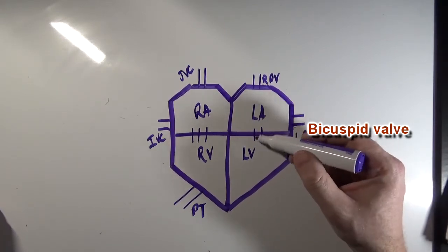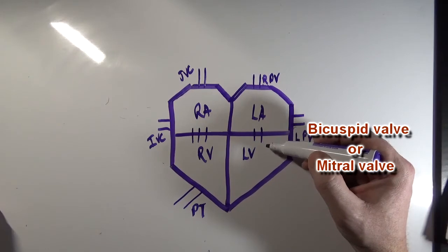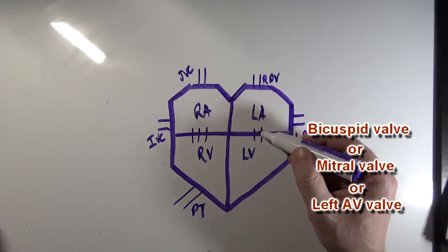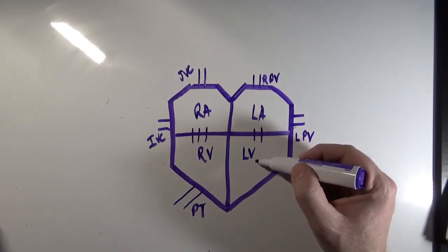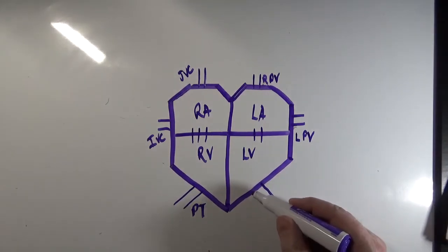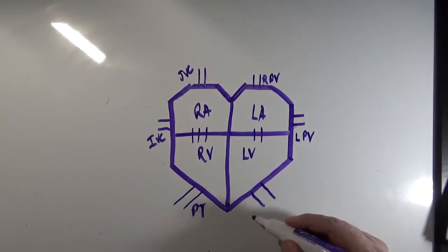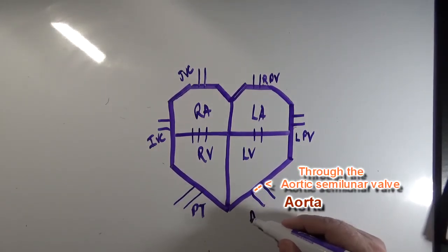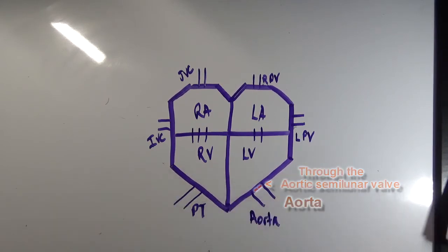The oxygenated blood passes through the bicuspid valve — represented with two lines for the two cusps. This bicuspid valve is also known as the mitral valve. Blood passes through that bicuspid valve into the left ventricle, and when the left ventricle contracts it sends blood through the aorta to the body.